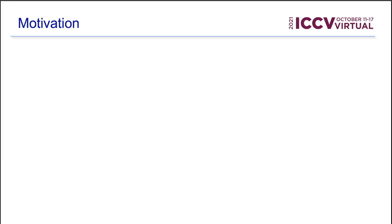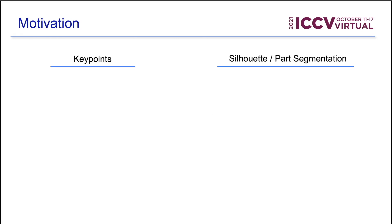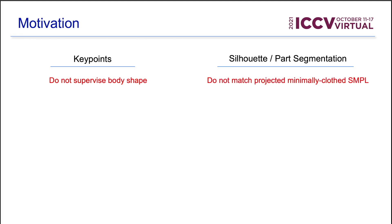As we see, previous methods either use key points, silhouettes, or part segmentation for supervision. Though these supervision cues give reasonable results, they are not accurate. This is because key points do not supervise body shape, and segmentations do not match the projected minimally clothed SMPL body.